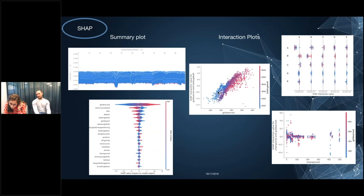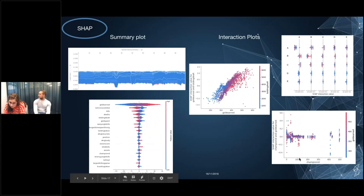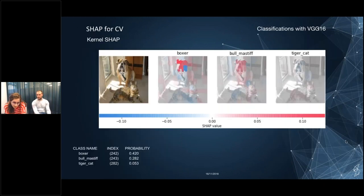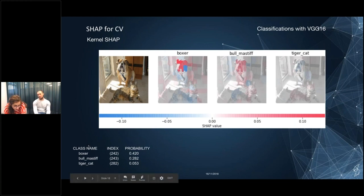For categorical features in interaction plots, it still provides some information about interaction effects. Moving to an image recognition problem — I implemented different SHAP applications on the VGG-16 model. The first three predictions for this image are boxer at 42%, bull mastiff, and tiger cat. I will look at explanations for boxer and tiger cat.